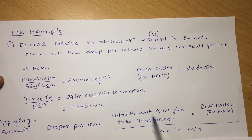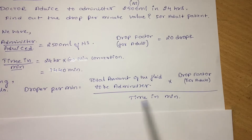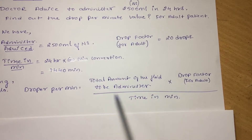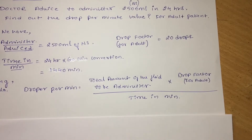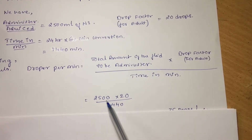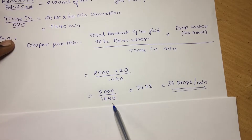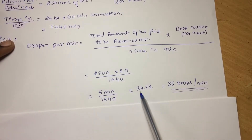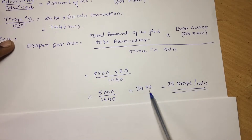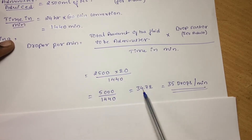Applying the formula: drops per minute equals total number of fluids to be administered multiplied by drop factor, divided by time in minutes. Substituting the values: 2500 into 20, divided by 1440. That simplifies to 5000 divided by 1440, which equals 34.72 — a recurring decimal. So we round this up to 35 drops per minute.